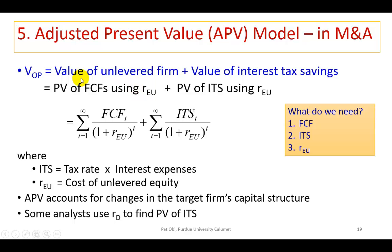The value of the unlevered firm is the present value of the projected free cash flows over the horizon, where the discount rate is not going to be the weighted average cost of capital. It would have to be the cost of the unlevered equity. The present value of the interest tax savings is also going to be based on the cost of the unlevered equity. In some cases, analysts would use the cost of the firm's debt as the discount rate.